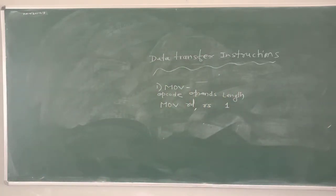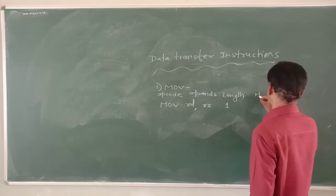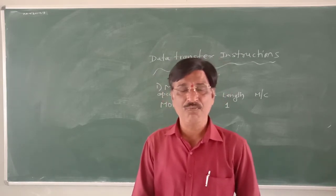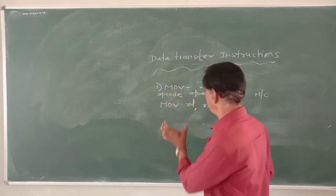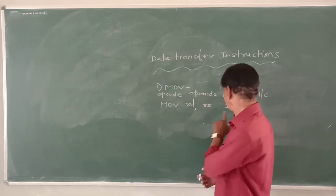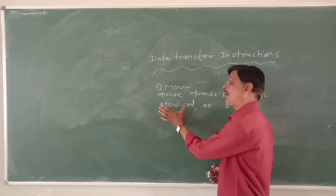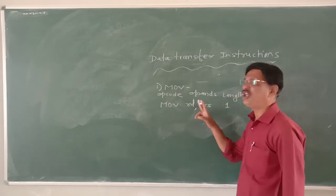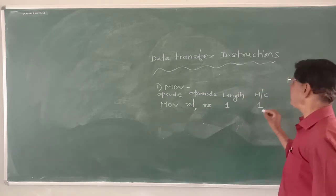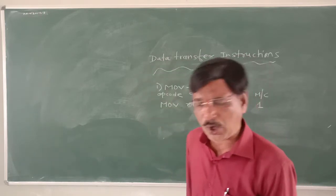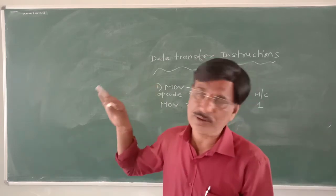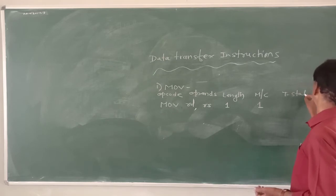The instruction length is one byte. The number of machine cycles is one — only the opcode fetch cycle — because within the opcode fetch, the microprocessor gets the activity to be performed as well as both operands. The number of T-states required is 4. The destination registers (RD) and source registers (RS) can be A, B, C, D, E, H, or L.